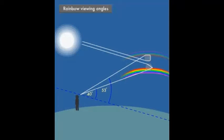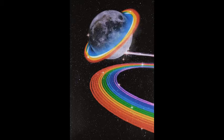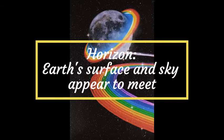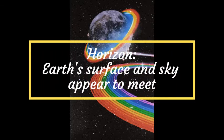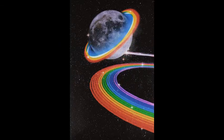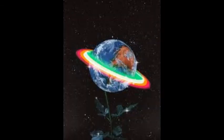Actually, the rainbow is not just curved, it is a circle. But we cannot see the full shape of the circle because of the horizon. If you are high enough like in an aeroplane and the sun is low enough behind you, you will see a complete circle.